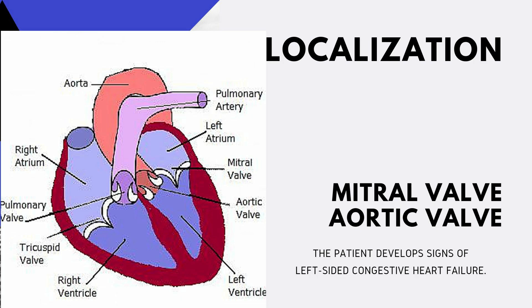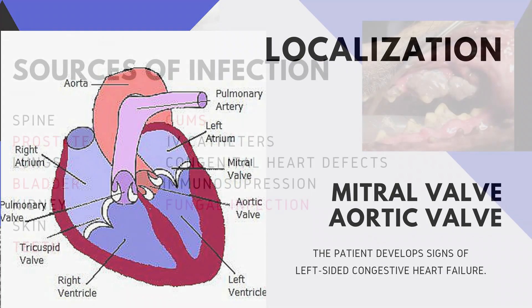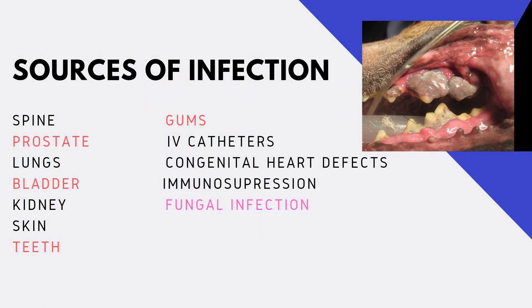Endocarditis is uncommon in dogs and rare in cats. Bacteria from infections of the spine, prostate, lungs, bladder and kidney, skin, teeth and gums, and long-term intravenous catheters may affect the heart valves. Some dogs with congenital heart defects such as subaortic stenosis have abnormal blood flow in their hearts, which makes them prone to endocarditis.